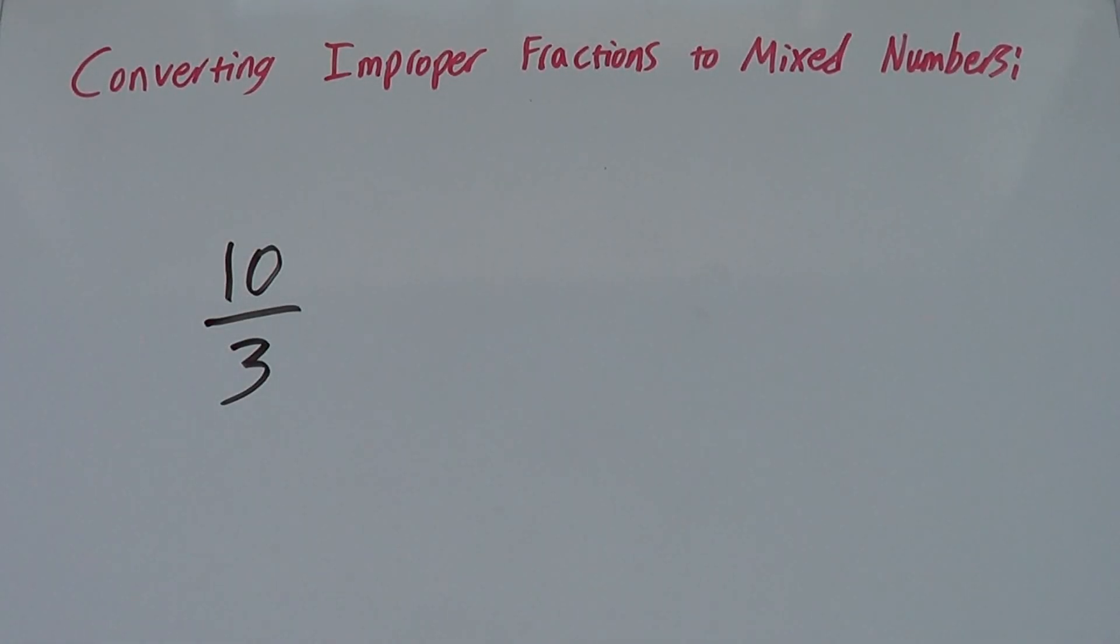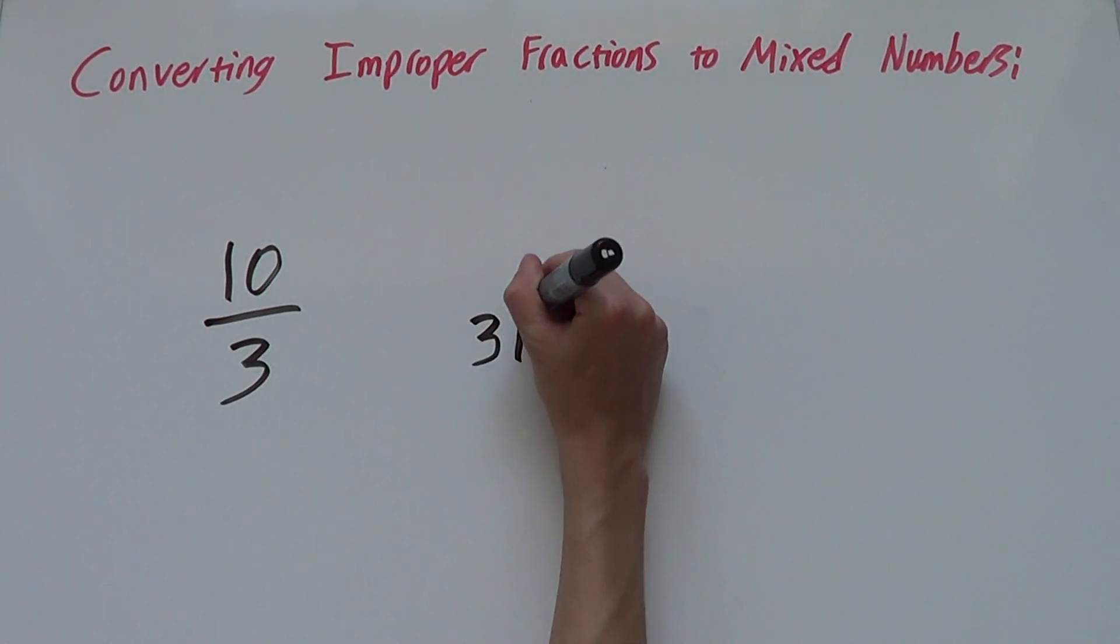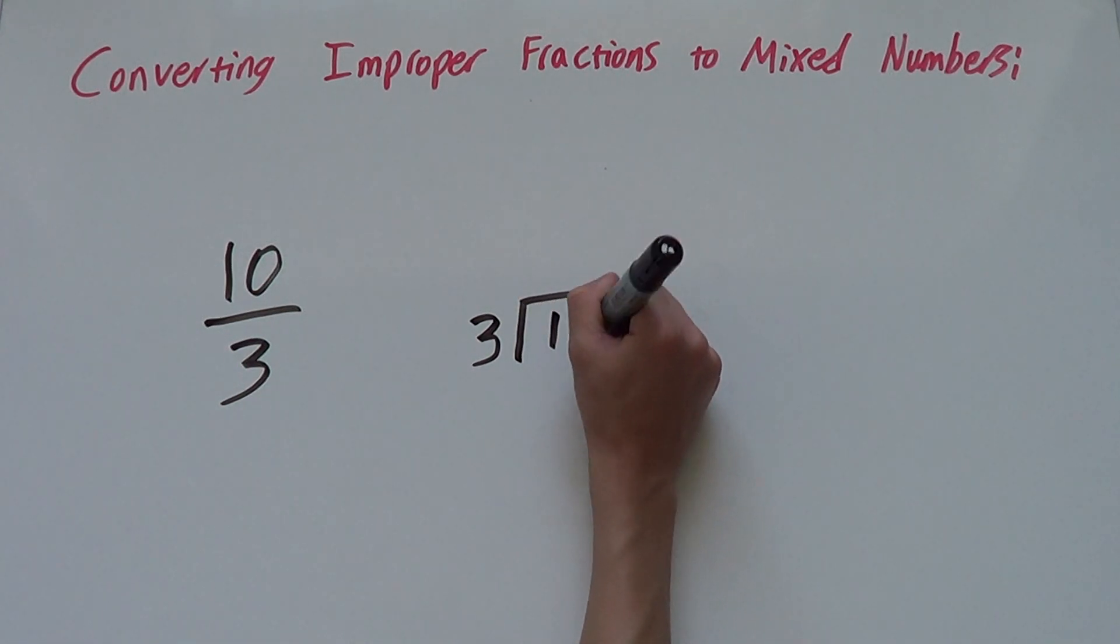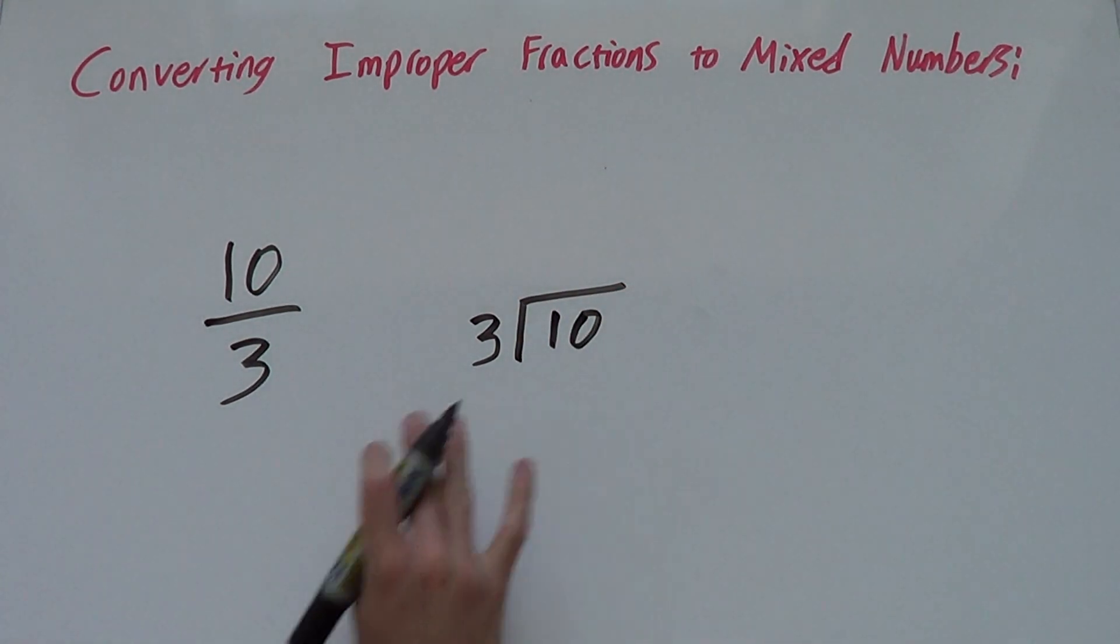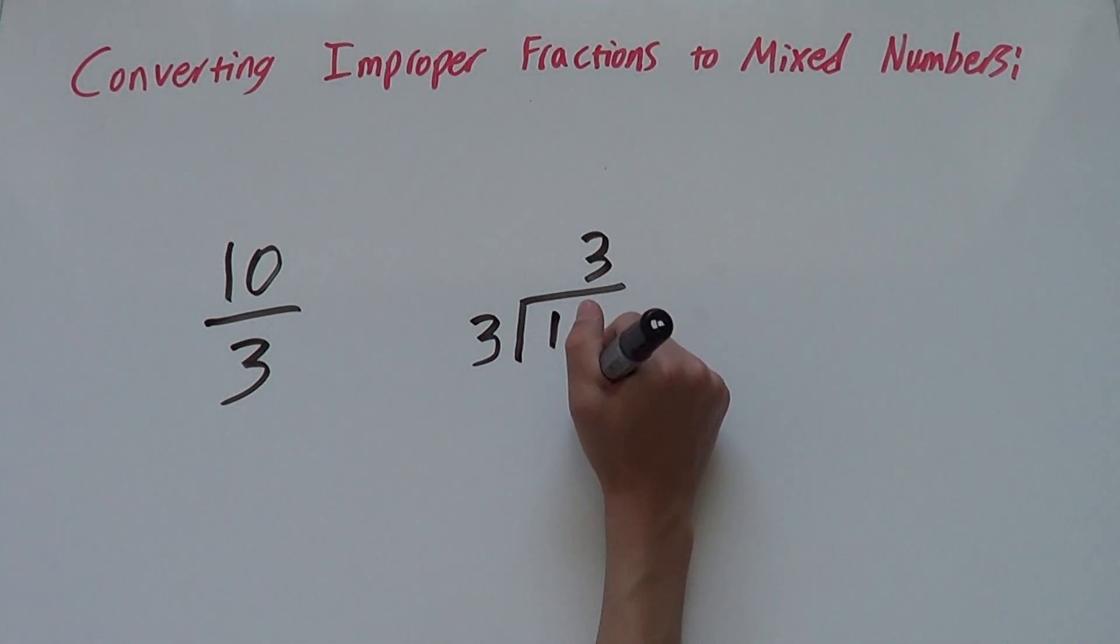To make this into a mixed number, we turn this into a division problem. So let's say we have 10 divided by 3. So 3 goes into 10 3 times with a remainder of 1.